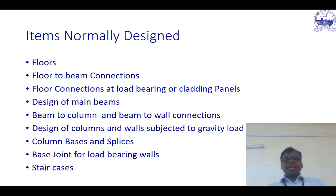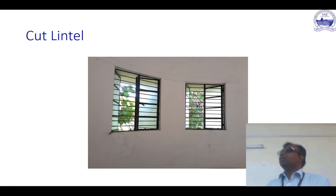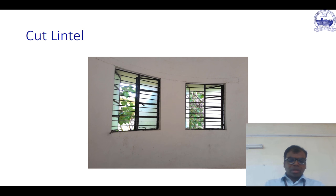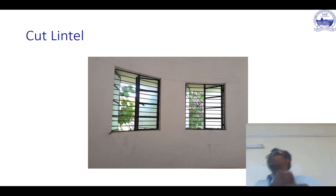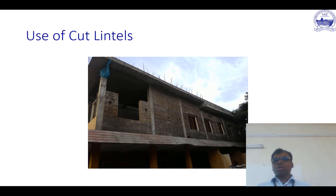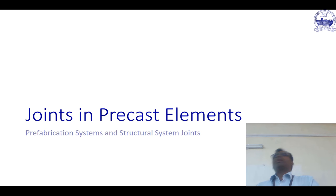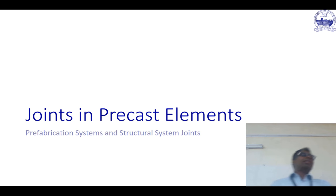Today we'll be going through some of the joints and looking at how the joints are made. This section in the GDN block — as you go down the steps you should be able to see the back lintel — is just to show where we are actually having it. You can also have the sun shade. Now we are coming to today's lecture: we are going to look at the joints in precast construction.